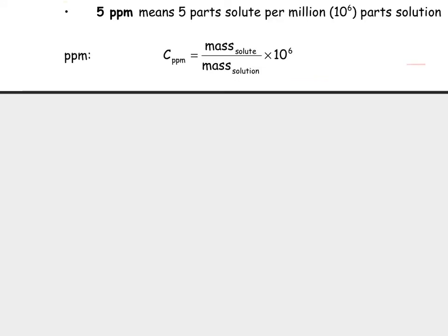Let's take a look at the formula to help us calculate parts per million. If I want to know concentration in parts per million, I'm going to take the mass of my solute and divide that by the total mass of my solution, and multiply by 10 to the power of 6. That makes sense because 10 to the power of 6 is our million. In fact, I can also do this for percent — the formula for percent concentration would be the mass of my solute divided by the mass of my solution, times 100 instead, and that will get me a concentration in percent.